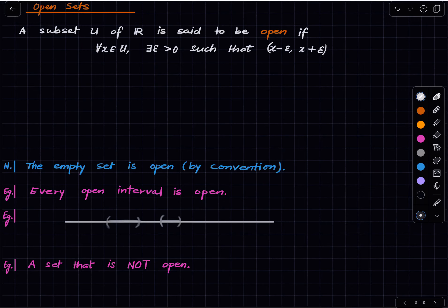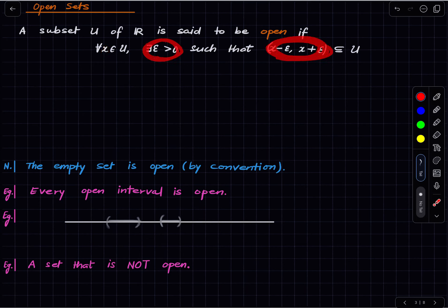The idea is that for every point in U there is some room around the point — a breathing room around the point — which is contained in U. So you can accommodate a breathing room for every resident in it.